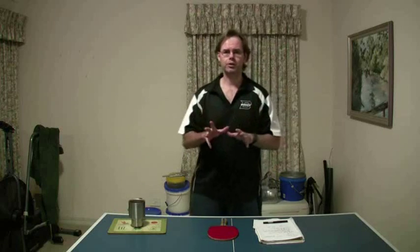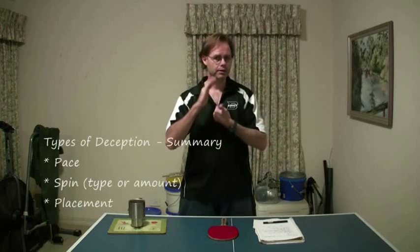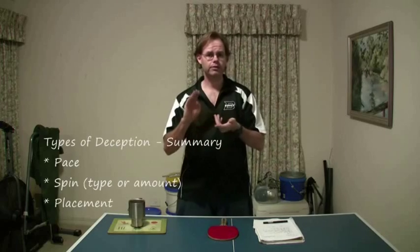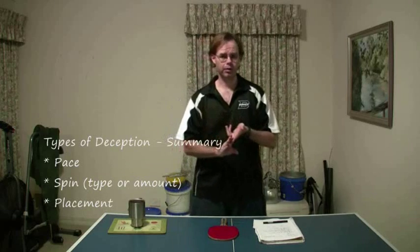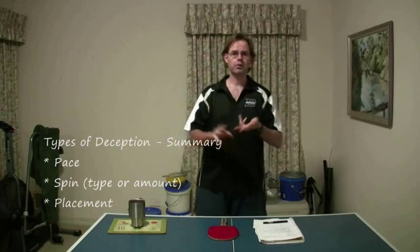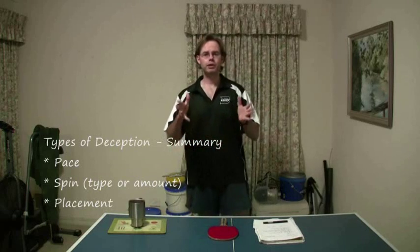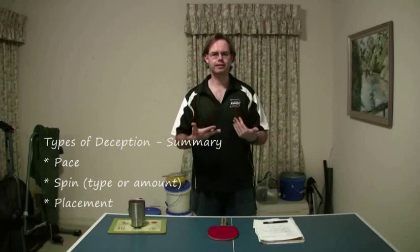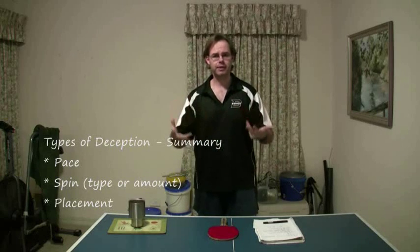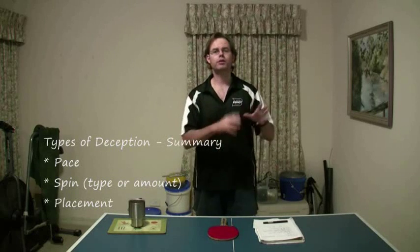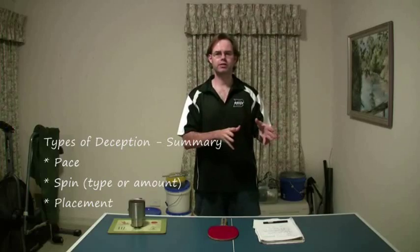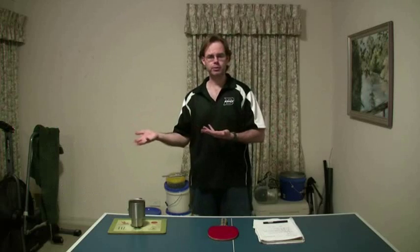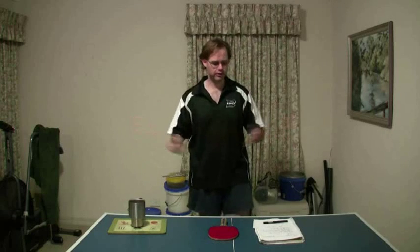So those are our three basic types of deceptive play: varying the pace, varying the spin, and varying placement. How can we go about actually achieving that? What are the best ways to deceive somebody versus more risky ways?